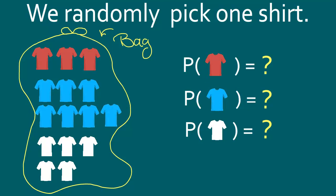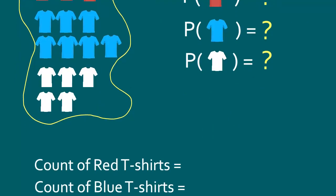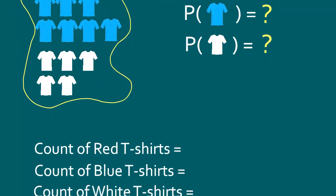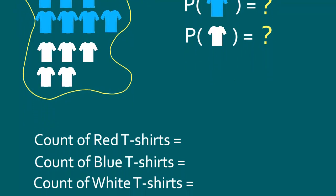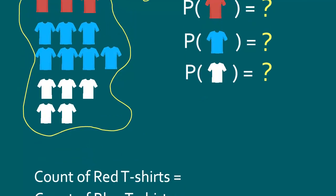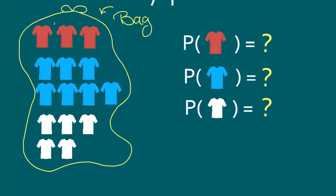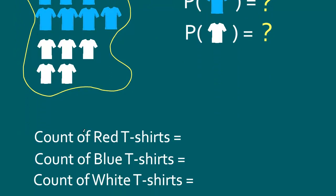How do we solve these questions? The first thing we are going to do is count each of these t-shirts. How many red t-shirts do we have? We have one, two, three. So the count of red t-shirts is three.